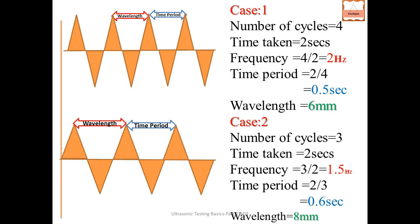Case two mein wavelength = 8 mm. Total 24 mm divided by 3 cycles = 8 mm per cycle. Case one mein wavelength 6 mm thi, case two mein 8 mm hai. Wave ka length badh gaya, isliye time zyada lag raha hai aur frequency kam ho gayi. Yahi hai relationship between frequency, time and wavelength.